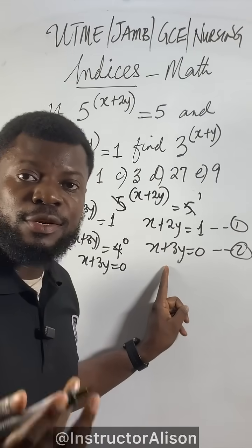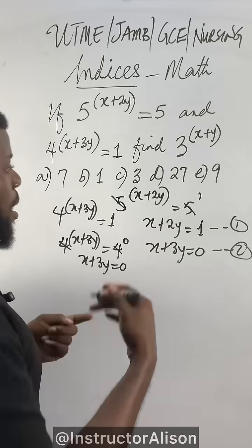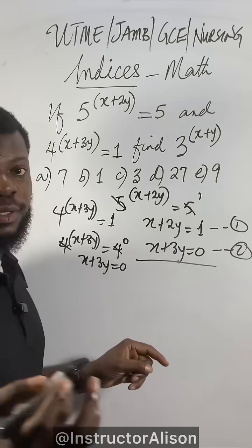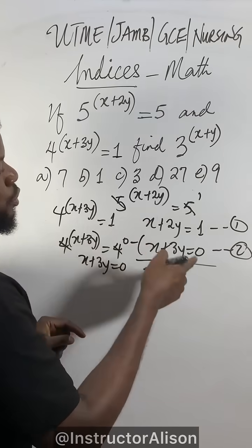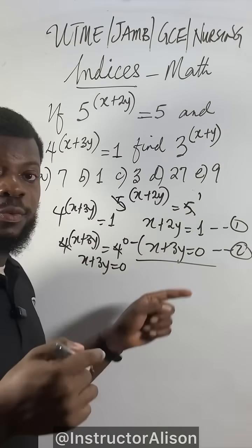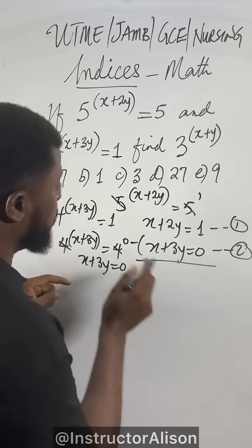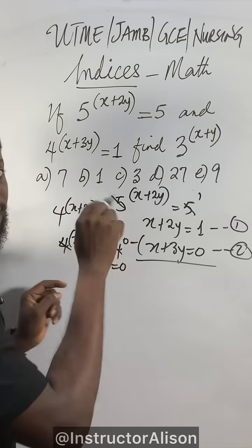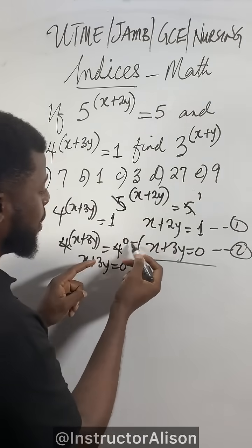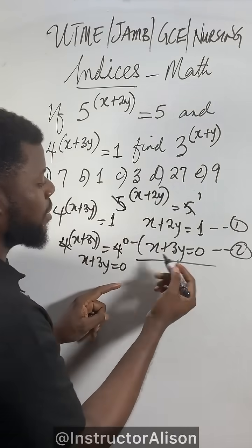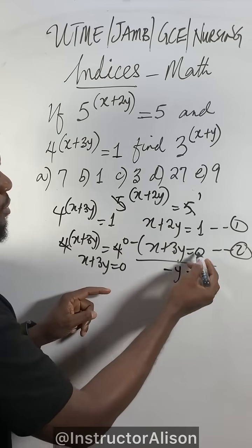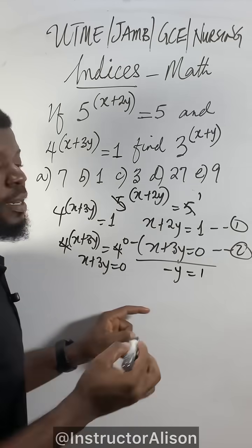Now I enter simultaneous equations. Elimination method. Subtract equation 1 from equation 2. x minus x is 0. 2y minus 3y gives us minus y. Equal to 1 minus 0, which is 1.